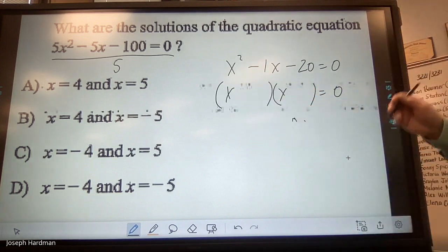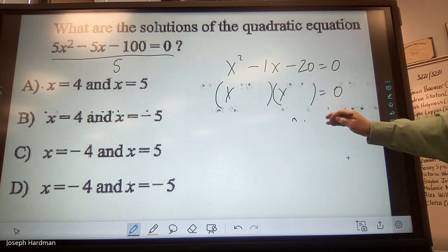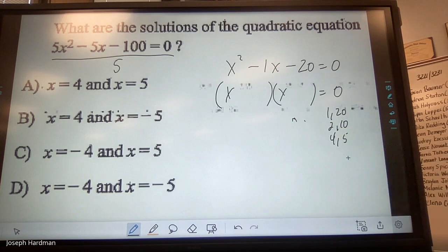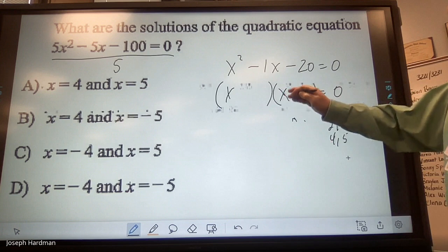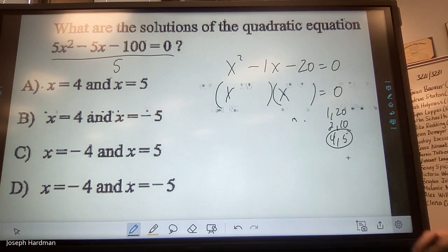And now I'm thinking about factors of 20. Now factors of 20, I've got 1 and 20, I've got 2 and 10, and I've got 4 and 5. And because this is minus 20, that means the signs are going to be different. So 5 minus 4 is 1, so I'm going to use 5 and 4.